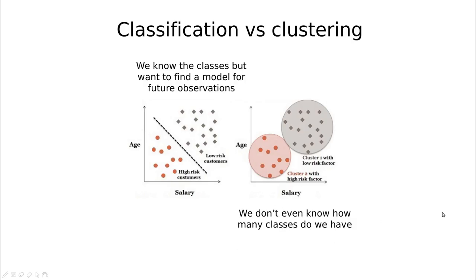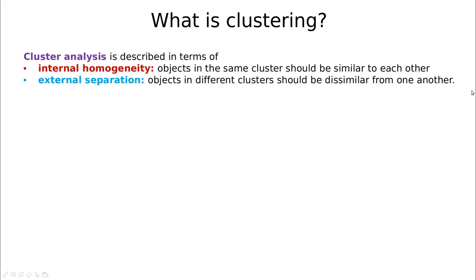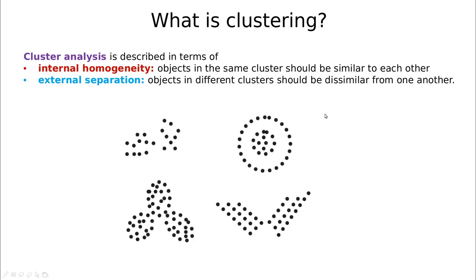To understand what is clustering, we have to understand how we can define a cluster. We have a couple of criteria. The first one is internal homogeneity: objects in the same cluster should be similar to each other. The other is called external separation: objects in different clusters should be dissimilar from each other.